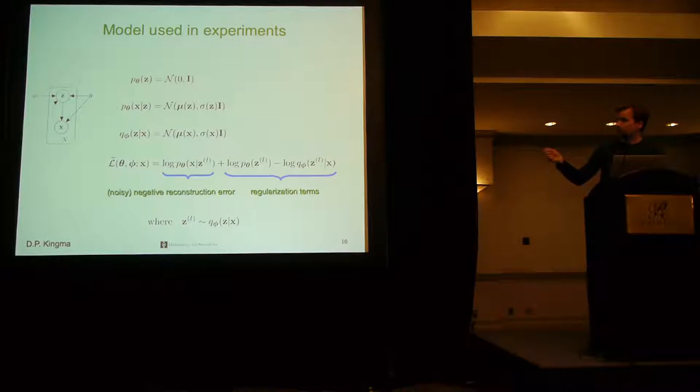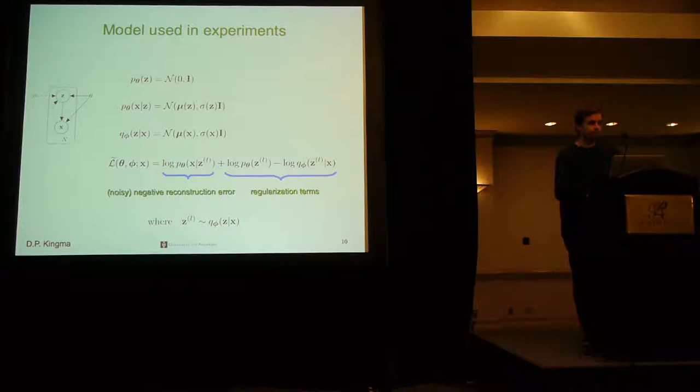The lower bound then also dictates these two regularization terms, which together form the KL divergence between the approximate posterior and prior. These just make sure that Q will not diverge too much from the prior of the latent variables.